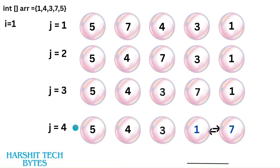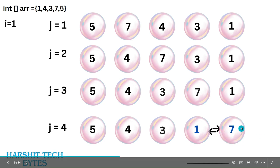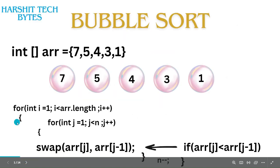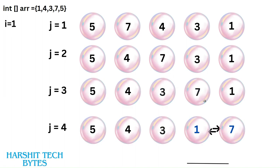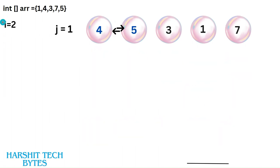For j=3 and j=4 we handle 7 and 1 similarly. You can see that at every iteration one element is sorted and placed in its correct position. So next time when we iterate the inner for loop, we subtract 1 from n, because in every iteration one element is fixed at its correct order. That's why we use n instead of arr.length.